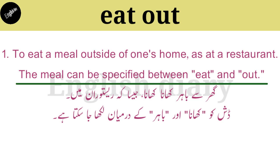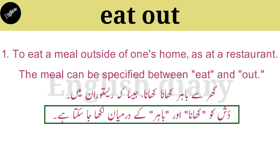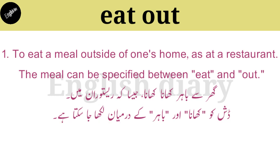The meal can be specified between eat and out. Jab aap ye sentence banayenge, eat out ko use karenge, to jo bhi dish, jo bhi aap ne khana khaya hai, wo sometime — kabhi kabhi — eat aur out ke darmiyan mein aajata hai, aur kabhi eat aur out ke baad mein aap mention karenge.